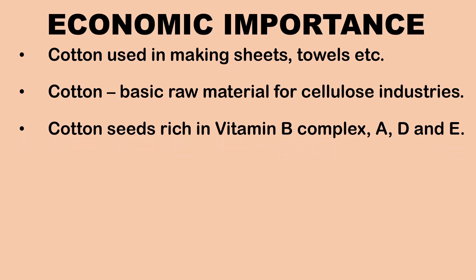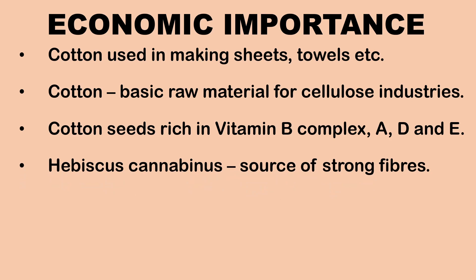Cotton seed is rich in vitamin B complex, vitamin A, D and E, and is also used as cattle feed. Hibiscus cannabinus is a source of strong fibres and is used as an alternative to jute. The fibres are suitable for manufacture of paper pulp and are also used for making fishing nets, ropes, gunny bags, etc.